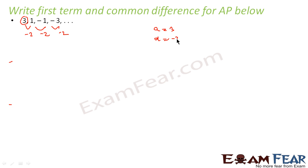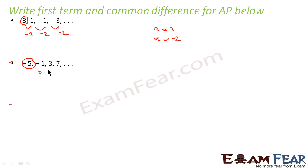One more example. a = -5. The difference: -1 - (-5) = 4, 3 - (-1) = 4, 7 - 3 = 4. You see the difference is 4 everywhere. So we can see that a = -5 and d = 4.